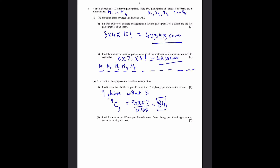Part 2: find the number of different possible selections if one photograph of each type is chosen. We choose 1 from 3 sunsets, 1 from 4 oceans, and 1 from 5 mountains — that is 3 choose 1 times 4 choose 1 times 5 choose 1, which equals 3 times 4 times 5, giving 60. That's our answer.